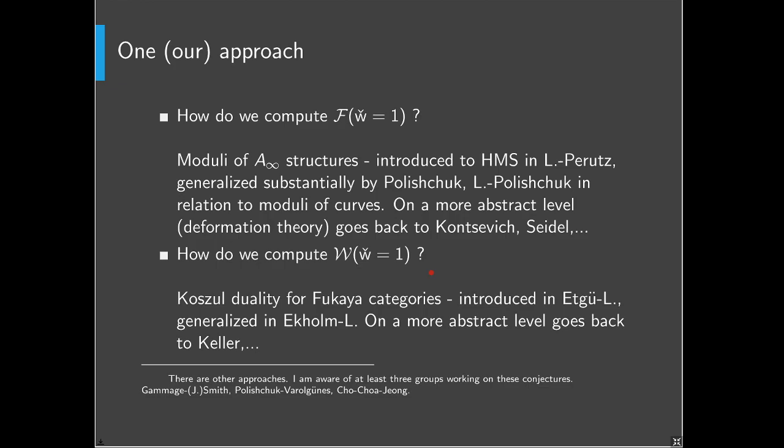The answer to the second question is Koszul duality. Once we understand the first equivalence, we use Koszul duality to say: if you know the equivalence for F (the compact Fukaya category), you can deduce the equivalence for W (the wrapped category). Koszul duality is familiar to everyone in representation theory. This particular way of relating F and W was introduced in my work with Lekili and generalized with Dyckerhoff, and on the algebra level goes back to work of Keller, who first introduced the idea of A∞ Koszul duality. Several groups of people are now working on these conjectures using somewhat different ideas, so hopefully they will be proven soon.